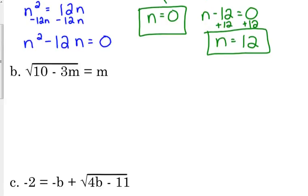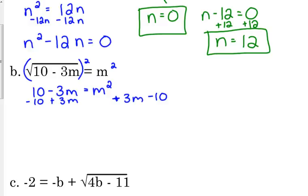Let's do another one. Let's do the square root of 10 minus 3m is equal to m. The square root is by itself, so we're good. We can go ahead and square both sides. So we get 10 minus 3m is equal to m squared. It's a quadratic because we've got m squared. So everything needs to be, I'm going to move it, even though it requires moving two things, I'm going to move everything to the right side because m squared is positive on the right side.